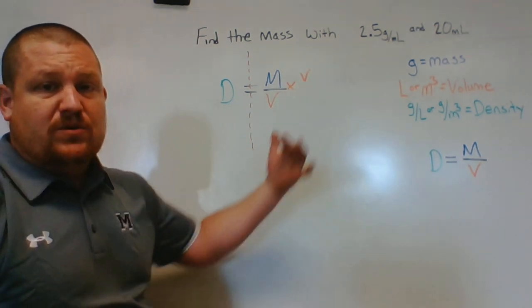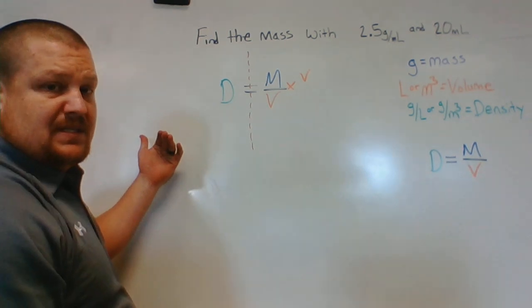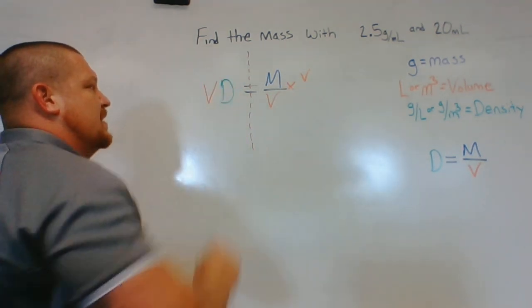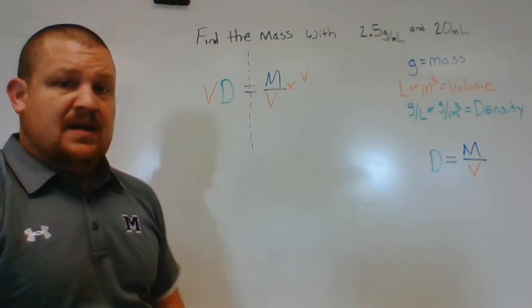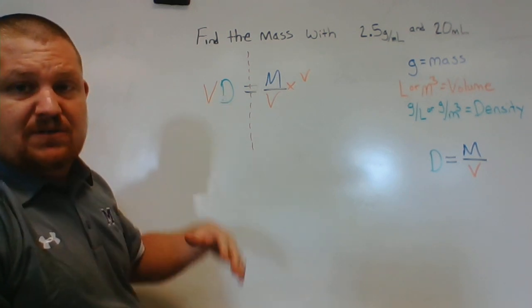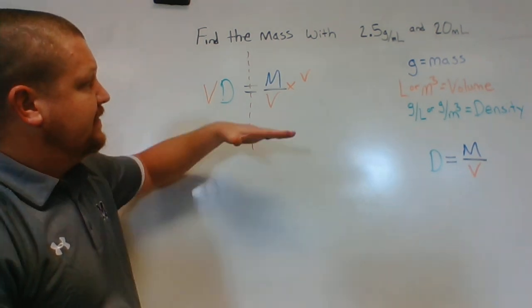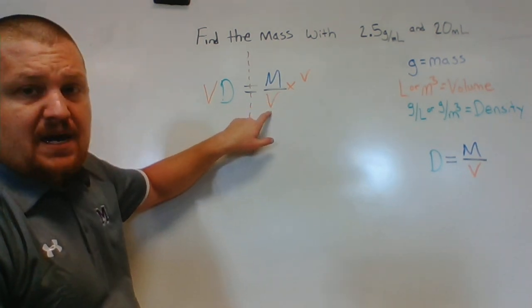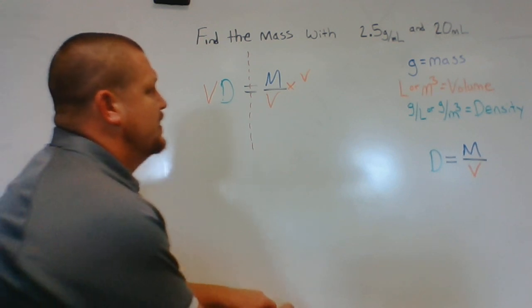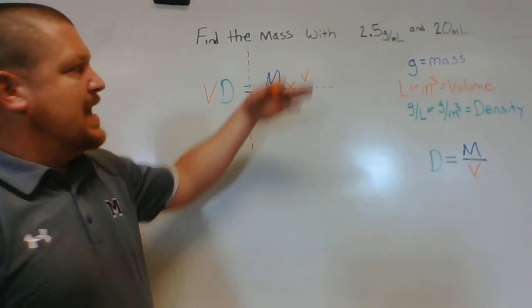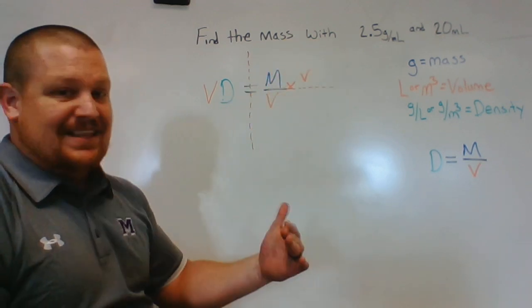All right, and then whatever we do to one side we must do to this side over here. So we multiply this side by V, we've got to multiply this side by V too. There's nothing there between them—we always assume multiplication, two variables next to each other. So now we have a volume in the denominator. I can kind of extend this out a little bit, right?